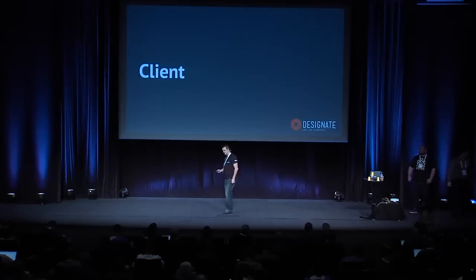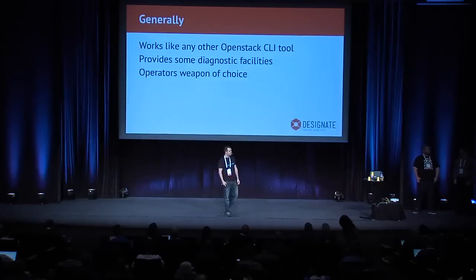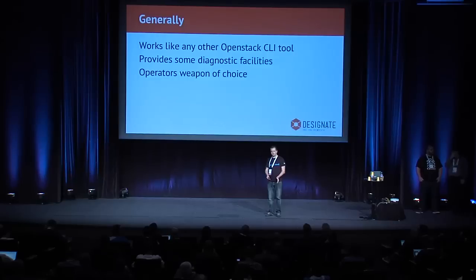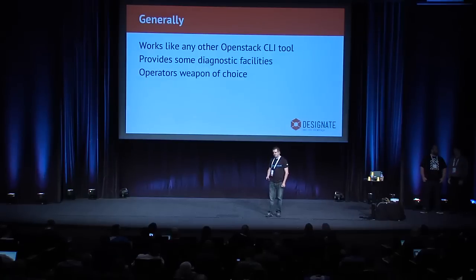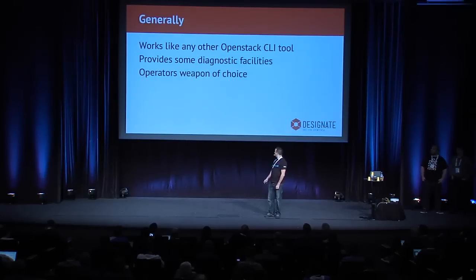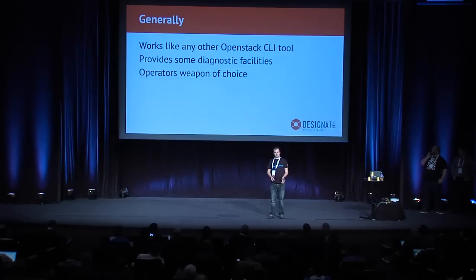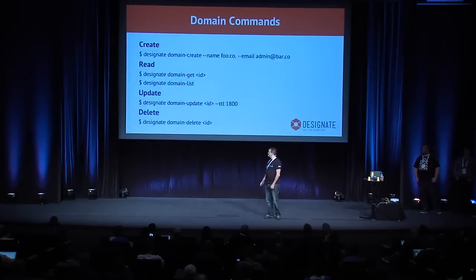The Designate client is similar to other OpenStack clients like Nova, Cinder, and Neutron — it comes with both a Python library for use in scripts and a CLI. Currently we're offering the client only for V1, as V2 is not yet stable. It also provides diagnostic functionality similar to what you'd find in Neutron's debugging tools, and it's what operators and users would use when interacting from the command line.